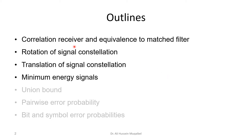The outline of this video will start with the correlation receiver and show its equivalence to the matched filter. Then we'll discuss the rotation of signal constellation and the translation of signal constellation, which will lead us to the minimum energy signals. In coming videos we will link this to the union bound, pairwise error probability, and bit and symbol error probabilities.